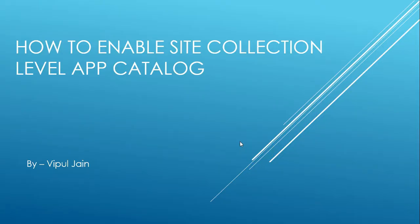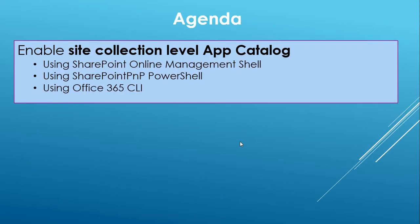Hello everyone and welcome to this video where I am going to tell you how you can enable site collection level app catalog. The agenda of this video will be that I will tell you three different methods by which you can enable site collection level app catalog — using SharePoint Online Management Shell, SharePoint PNP PowerShell, and Office 365 CLI.